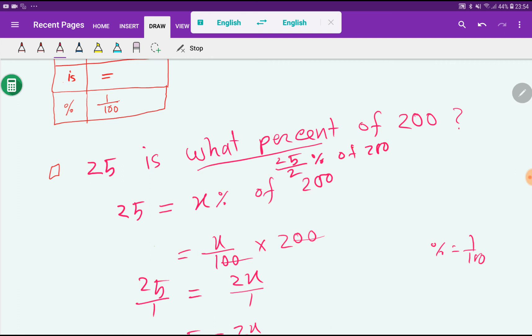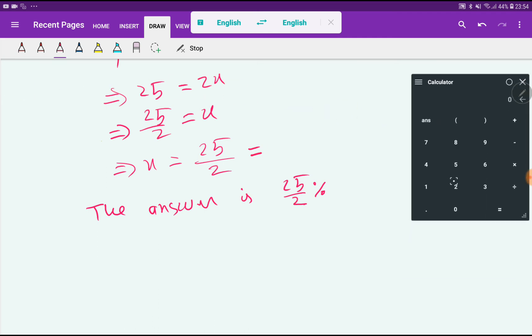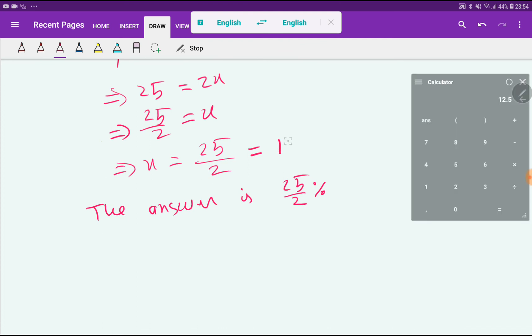If you take the fraction, then what will come here? Look at here. Now we have to use our calculator: 25 divided by 2, that gives you 12.5. The answer is 25 by 2, or 12.5 percentage.